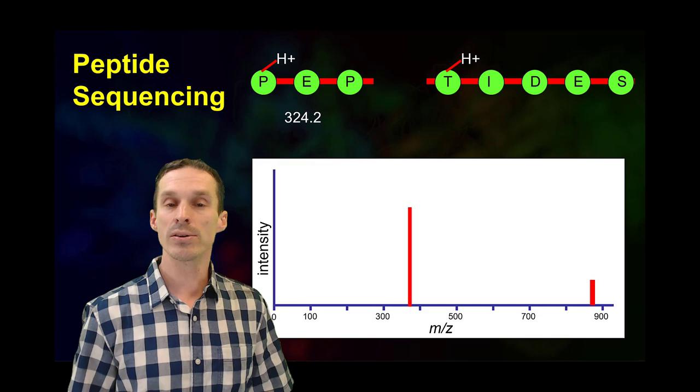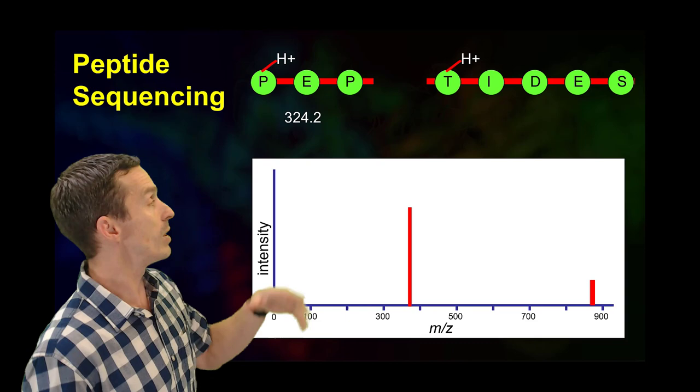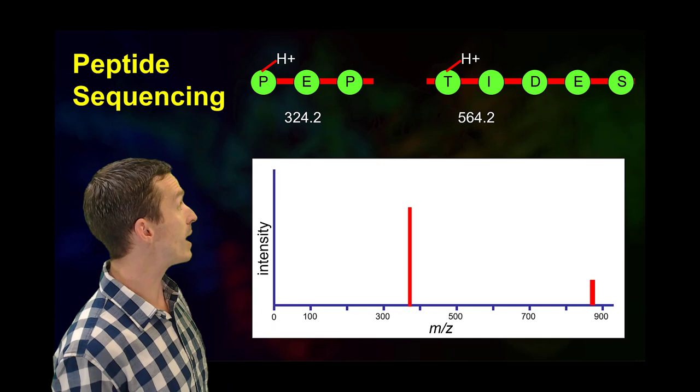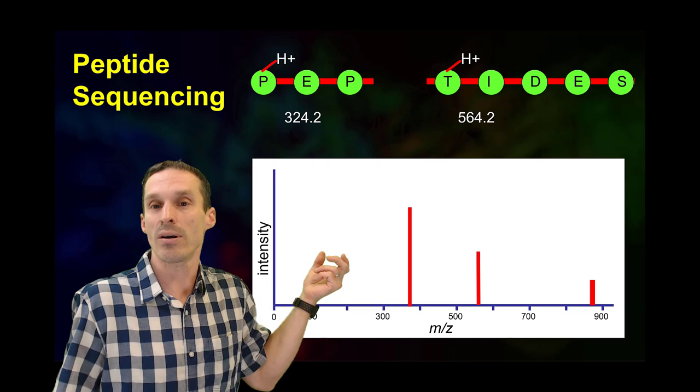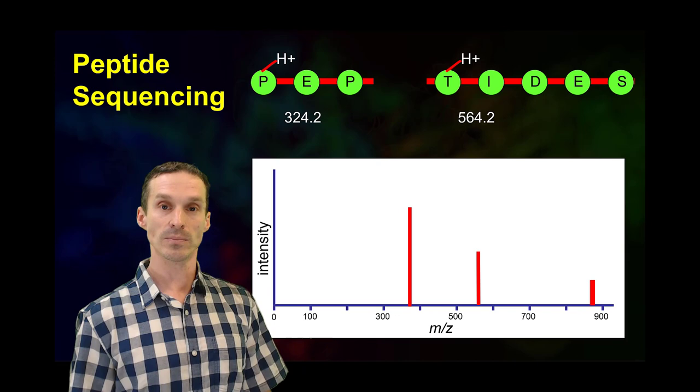Now, who's to decide that the proton happened to land over there? So let's say in another world, or in another simultaneous event, some of that peptide actually had the charge on the other side. If that were to happen, then yeah, the other fragment would be observed. You could calculate its mass, and it would correspond right over here. You notice that the two of them, if you add them together, are going to correspond to the original mass plus an extra proton attached to it. That ion over there, well, that would be a one, two, three, four, five—a Y5 ion.